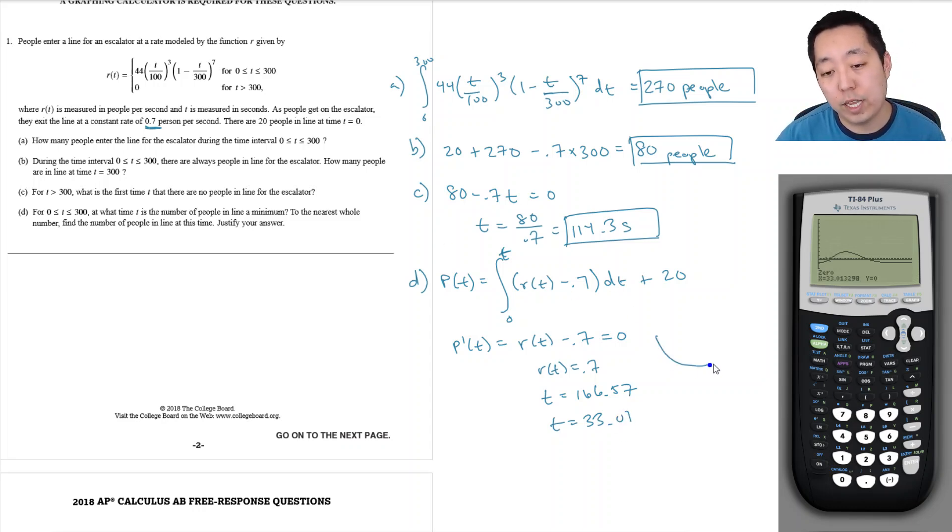Now I want to find the minimum. Minimums occur when the slopes go from negative to positive. The derivative here goes from negative to positive, so this one is a relative min, and this is a relative max.